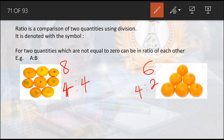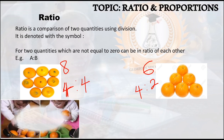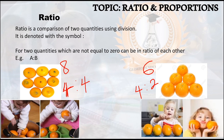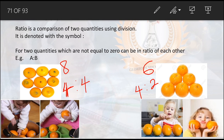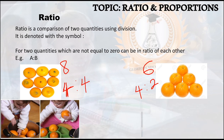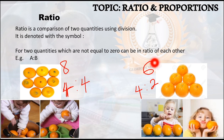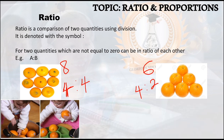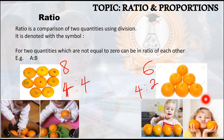Each person gets the exact amount of value I'm sharing. For the eight oranges shared four to four, each person gets four because the total is eight. For the six oranges shared four to two, one person gets four and the other gets two. Do you understand ratio now? Brilliant.